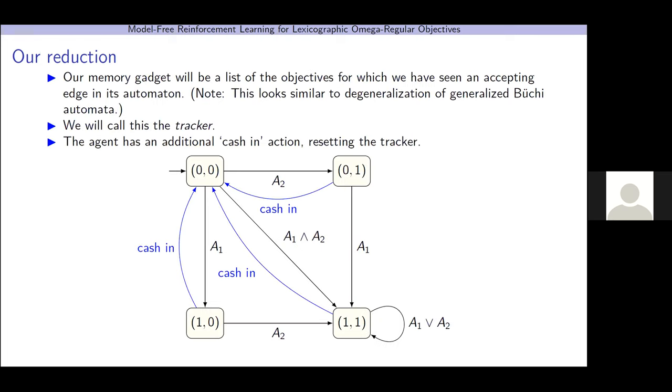So, we cannot simply use an off-the-shelf lexicographic reinforcement learning tool with the single objective reward reduction I've shown before, because this will produce memoryless strategies, when memory-full strategies are optimal. So, we need a new reduction. So, we're going to introduce a memory gadget. This memory gadget is going to be the list of objectives for which we've seen an accepting edge in its automaton. Note that this looks similar to degeneralization, if you're familiar with that. So, we're going to call this the tracker. We're also going to give the agent an additional cash-in action, which resets the tracker.